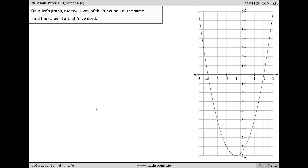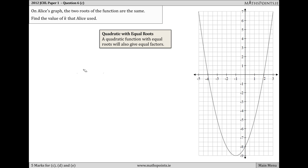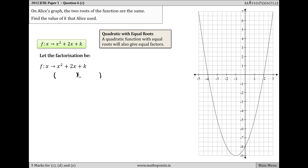Part C tells us that on Alice's graph, the two roots of the function are the same, and we want to find the value of k Alice used. If a quadratic has equal roots, the factorization has equal factors. So we write two brackets: the first term in each must multiply to give x², so it's x times x. Since the roots are equal, the last term in each bracket is the same — we'll call it t. So the factorization is (x + t)(x + t). Multiplying the last terms: t × t = t² = k.